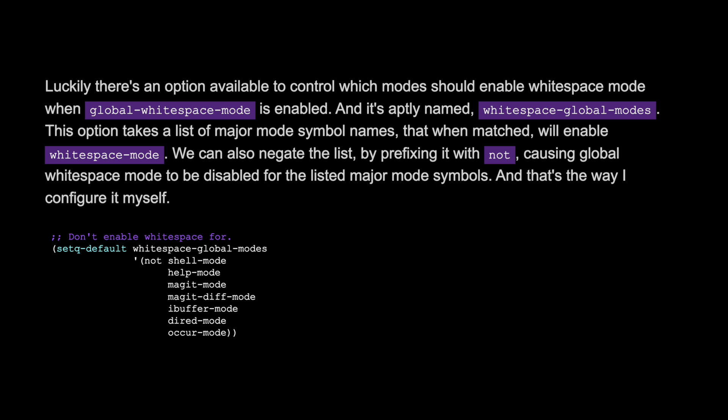Luckily, there's an option available to control which modes should enable whitespace mode when global-whitespace-mode is enabled, and it's aptly named whitespace-global-modes. This option takes a list of major mode symbol names that when matched will enable whitespace mode. We can also negate the list by prefixing it with 'not', causing global whitespace mode to be disabled for the listed major mode symbols — and that's the way I configured it myself.